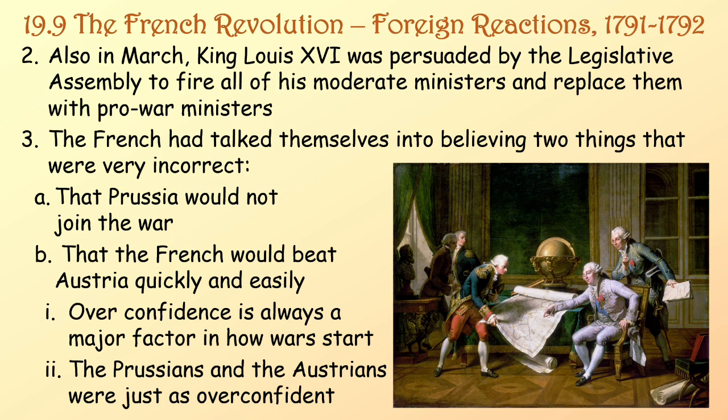Also in March, King Louis XVI was persuaded by the Legislative Assembly to fire all of his moderate ministers and replace them with pro-war ministers. The French had talked themselves into believing two things that were very incorrect: number one, that Prussia would not join the war, and number two, that France would beat Austria quickly and easily. Overconfidence is always a major factor in how wars start — and the Prussians and the Austrians were just as guilty of overconfidence.